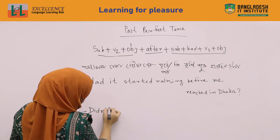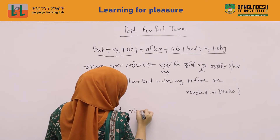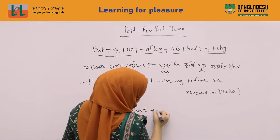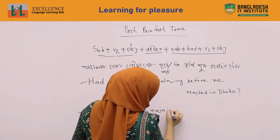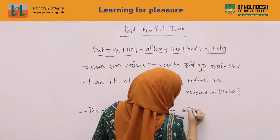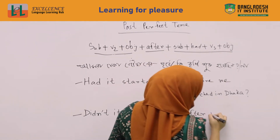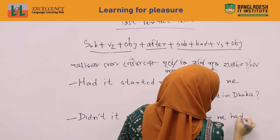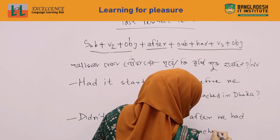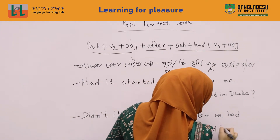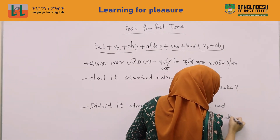Didn't it start raining after we had reached in Dhaka? This is the negative interrogative form of the sentence.